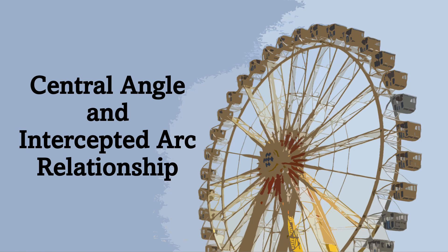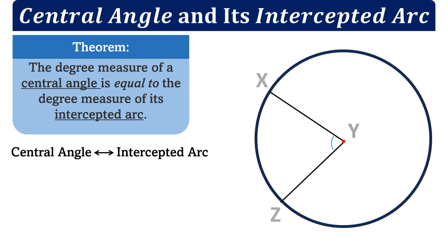This video is about the central angle and intercepted arc relationship, with some examples. A theorem states that the degree measure of a central angle is equal to the degree measure of its intercepted arc. From this figure, the central angle is angle XYZ (or ZYX), and its intercepted arc is arc XZ (or ZX).